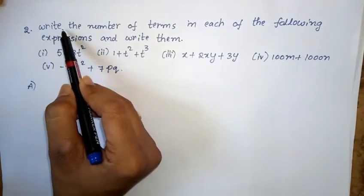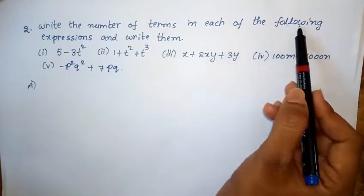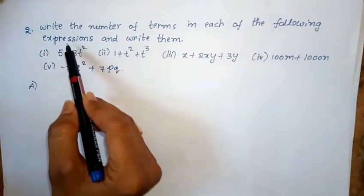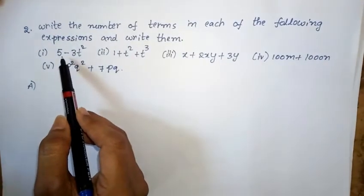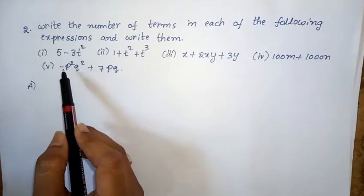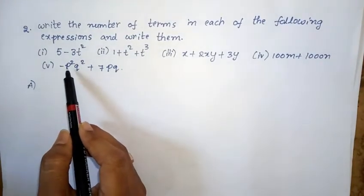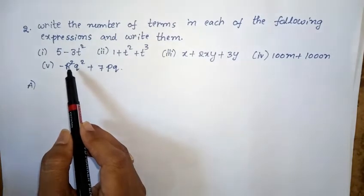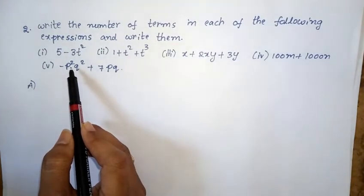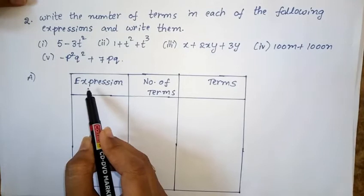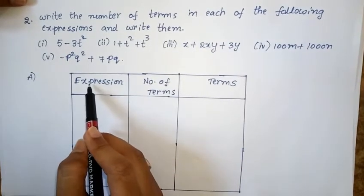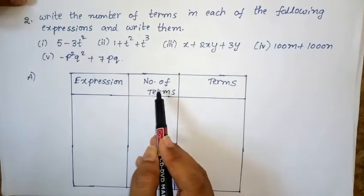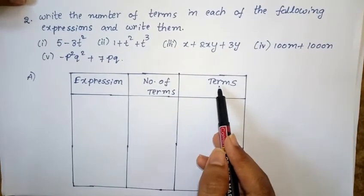Second problem: write the number of terms in each of the following expressions and write them. In this problem, five expressions are given. We need to find how many terms are there and also what the terms are. This is presented as a table with three columns: expression, number of terms, and terms.